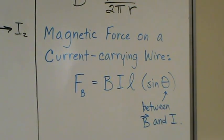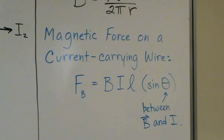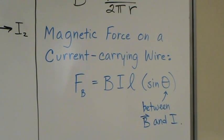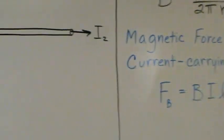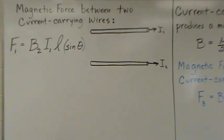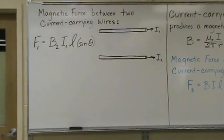In some cases as in this example later the angle theta will be 90 degrees and then sine of 90 is just 1 and that term will drop out. So here we go let's figure out the magnetic force between two current carrying wires.